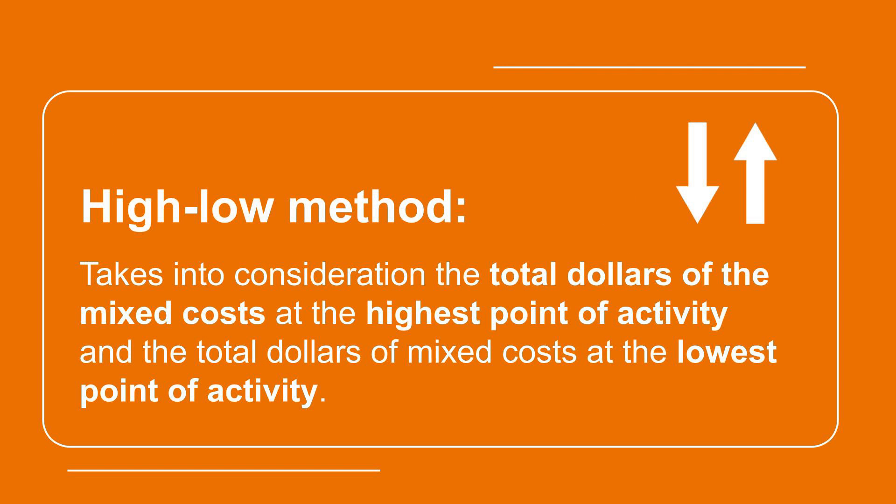High-low method is used to split the fixed and variable components of a mixed cost of the product. It takes into consideration the total dollars of mixed cost at the highest point of activity and the total dollars of mixed cost at the lowest point of activity. The presumption is that the fixed cost will remain the same at both points of the activity, which is the high point and the low point, and therefore the net change of the mixed cost must be variable cost.